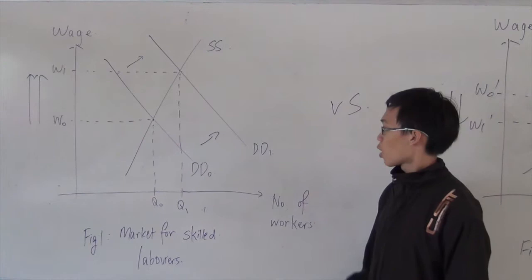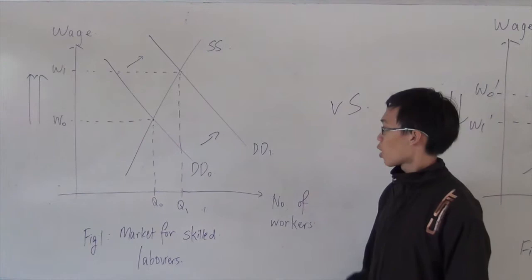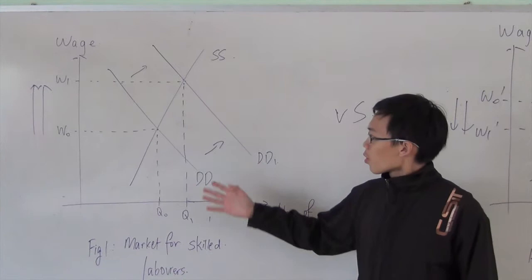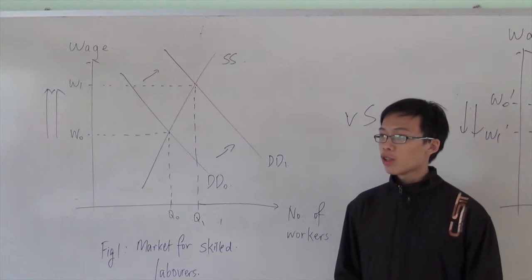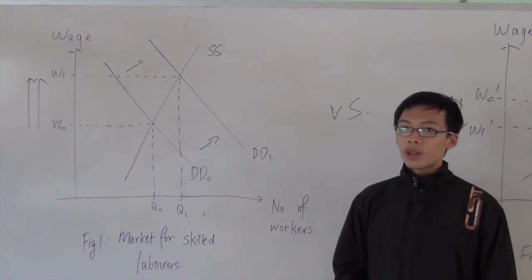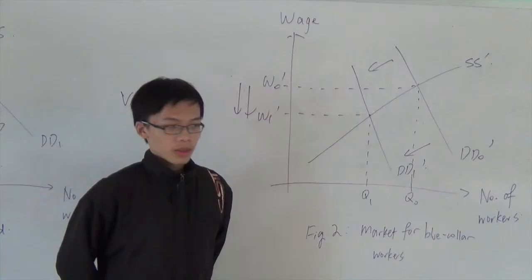As such, many firms now prefer hiring workers which are highly skilled in these areas, causing the demand for them to increase from D0 to D1. Now, this causes their wages to increase greatly from W0 to W1. And the increase in wages is very substantial due to the fact that the price elasticity of supply of such workers is relatively small. This is due to the simple fact that it takes a very long period of time to nurture such skilled and highly capable workers.